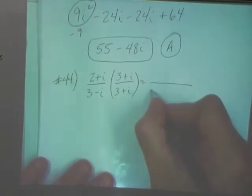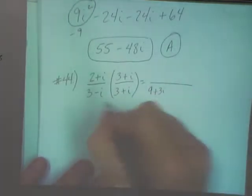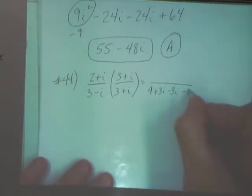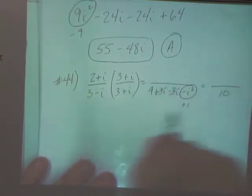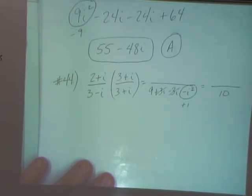Let's go ahead and confirm the denominator. So I'll have nine plus three I minus three I minus I squared. So this is going to become what? Five plus one. Plus one. These will cancel out. So in my denominator I'm left with ten. It worked out.